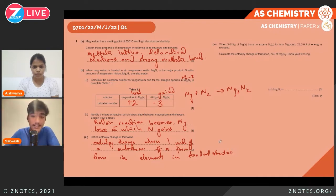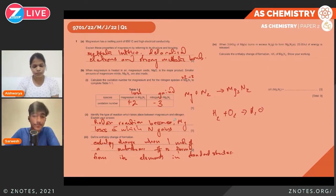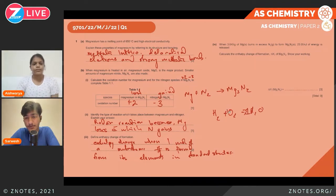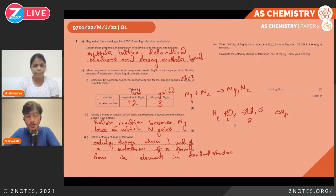Standard states means elements in their naturally occurring form — for example, oxygen naturally occurs as O₂. So if you form water from H₂ reacting with half a mole of O₂ to produce one mole of water, that enthalpy change is the enthalpy change of formation. It would not count if you produced two moles instead of one, or if you used ozone (O₃) instead of O₂, since it must be the standard state.